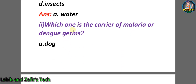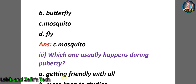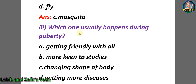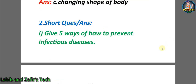Second question: which one is the carrier of malaria or dengue germs? A) dog, B) butterfly, C) mosquito, D) fly. The answer is C) mosquito. Third question: which one usually happens during puberty? A) getting friendly with all, B) more keen to studies, C) changing shape of body, D) getting more diseases. The answer is C) changing shape of body.